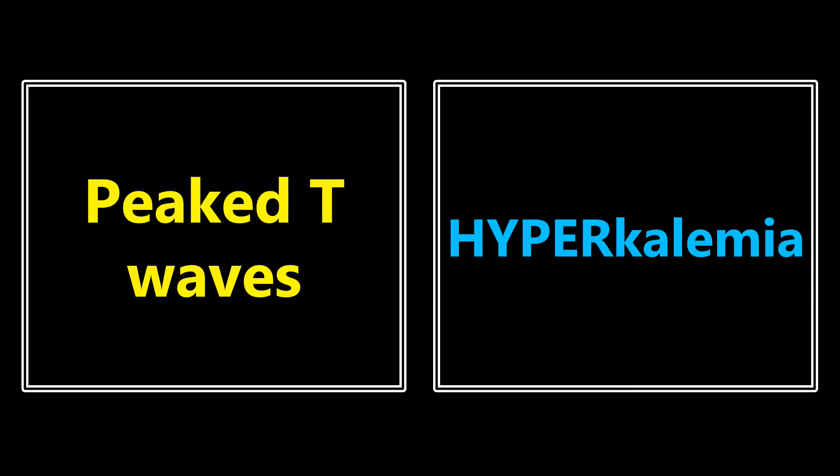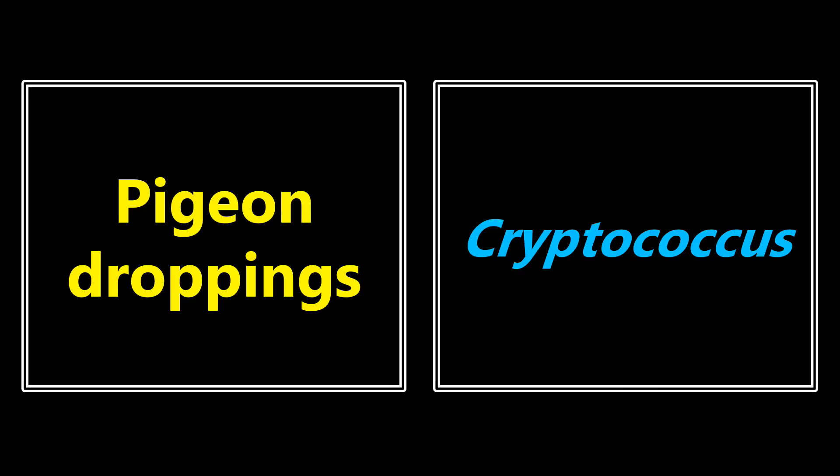Peaked T waves: if you see this in a vignette or on an EKG, it's pretty noticeable and refers to hyperkalemia. It usually doesn't appear until there's pretty severe hyperkalemia, but you might see it on an EKG or in a question. Pigeon droppings: the first thing you want to be thinking about is cryptococcus — that's usually the only association they'll make with pigeon droppings on the test.